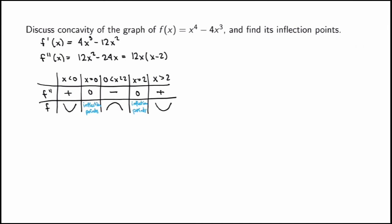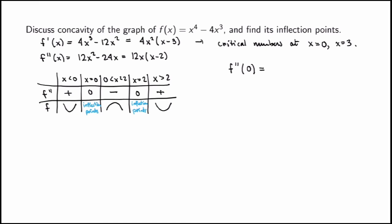Now for local min and max: rewriting f prime as 4x²(x − 3) gives two critical numbers — x = 0 and x = 3. To use the second derivative test, I evaluate f double prime at these points. At x = 0: f double prime of 0 = 0, so I cannot conclude anything from the second derivative test — it could be a local min, local max, or neither.